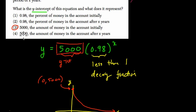If you look at choice 3, it says 5,000, the amount of money in the account initially. That's what the y-intercept represents. All right, thanks.